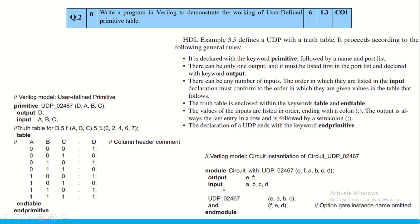We can use this UDP inside a module while designing. The module 'circuit' instantiates UDP_0 by mapping variables D, A, B, C to E, A, B, C accordingly. An AND gate is then used to complete the functionality of the expression. Detailed discussion of UDP in Verilog will be covered in another video.